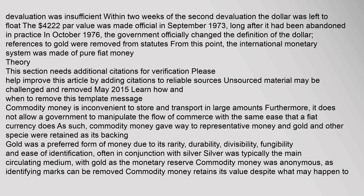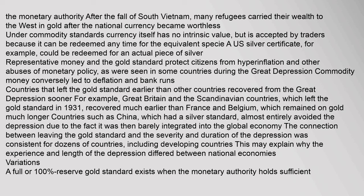Commodity money is inconvenient to store and transport in large amounts, and it does not allow a government to manipulate the flow of commerce with the same ease that a fiat currency does. As such, commodity money gave way to representative money, with gold and other specie retained as its backing. Gold was a preferred form of money due to its rarity, durability, divisibility, fungibility, and ease of identification, often in conjunction with silver. Silver was typically the main circulating medium, with gold as the monetary reserve. Commodity money was anonymous and retains its value despite what may happen to the monetary authority — after the fall of South Vietnam, many refugees carried their wealth to the west in gold after the national currency became worthless.